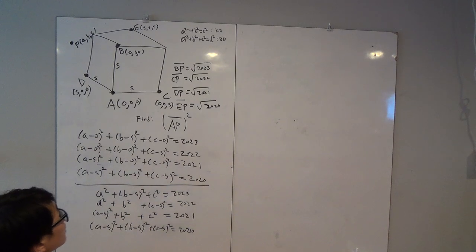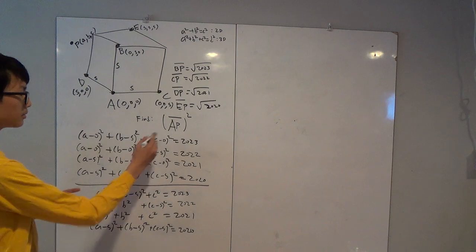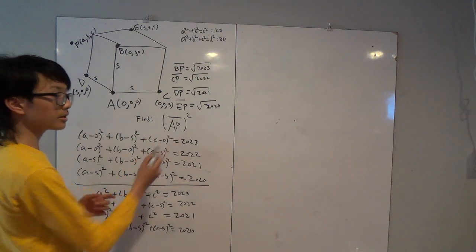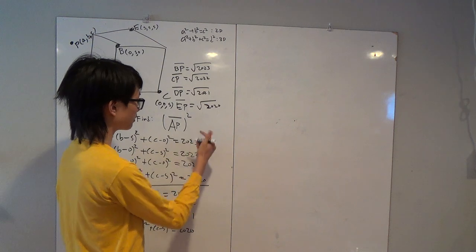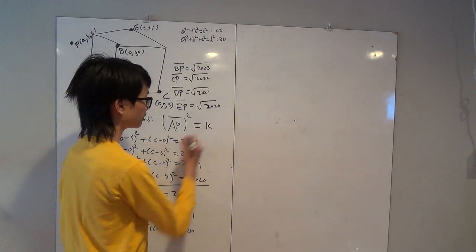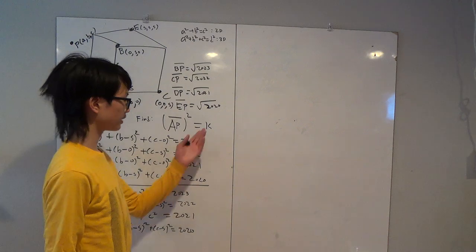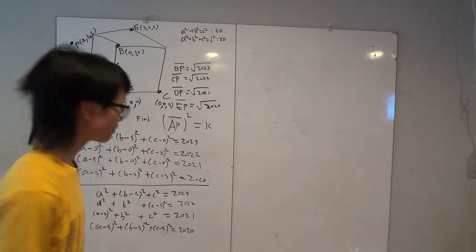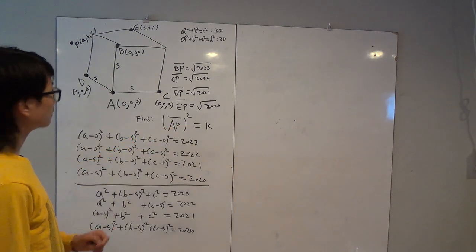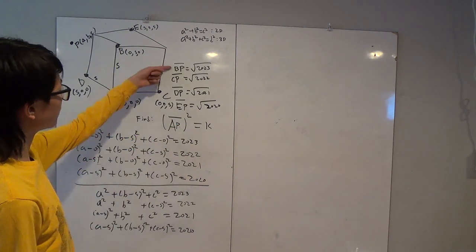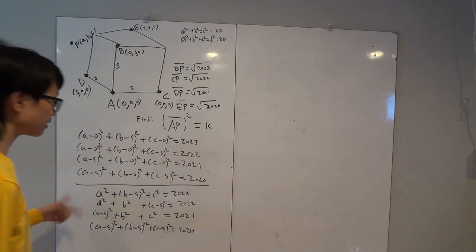I'm actually going to add a fifth equation. We don't know what the distance AP is — in fact, we're trying to find it. I'll set AP² equal to K, so if we can find K, we have our answer.